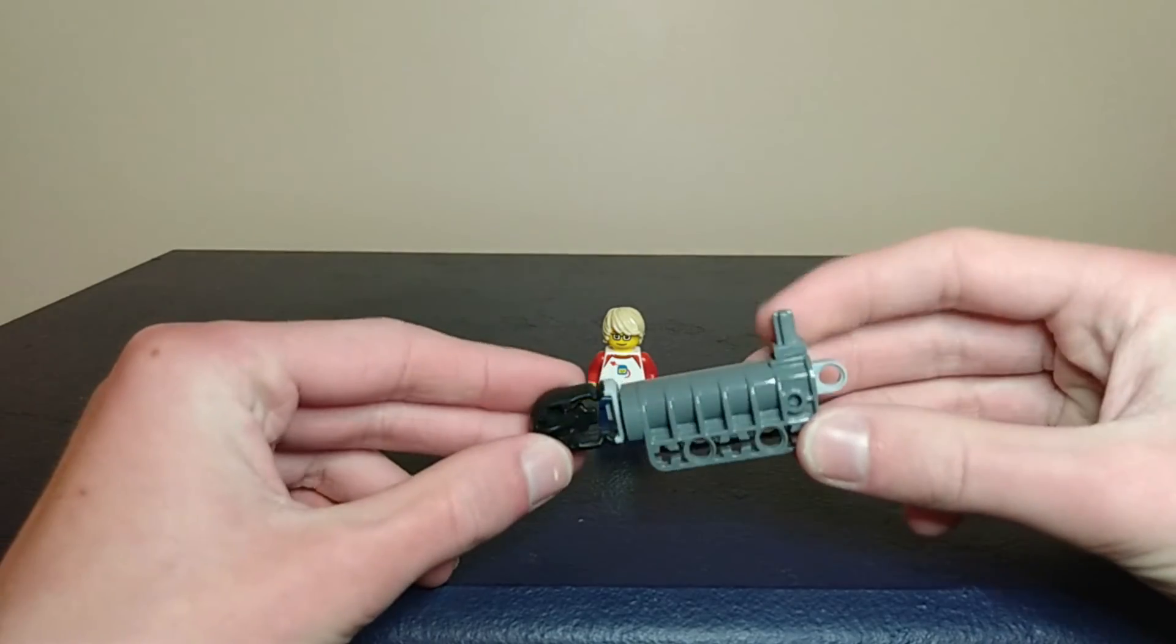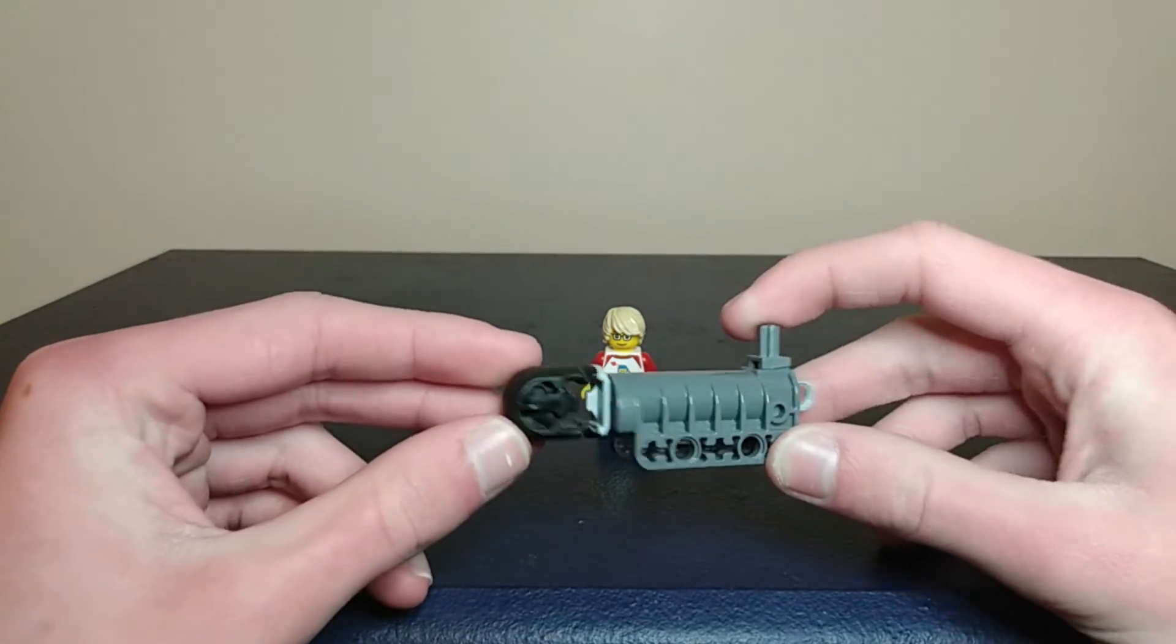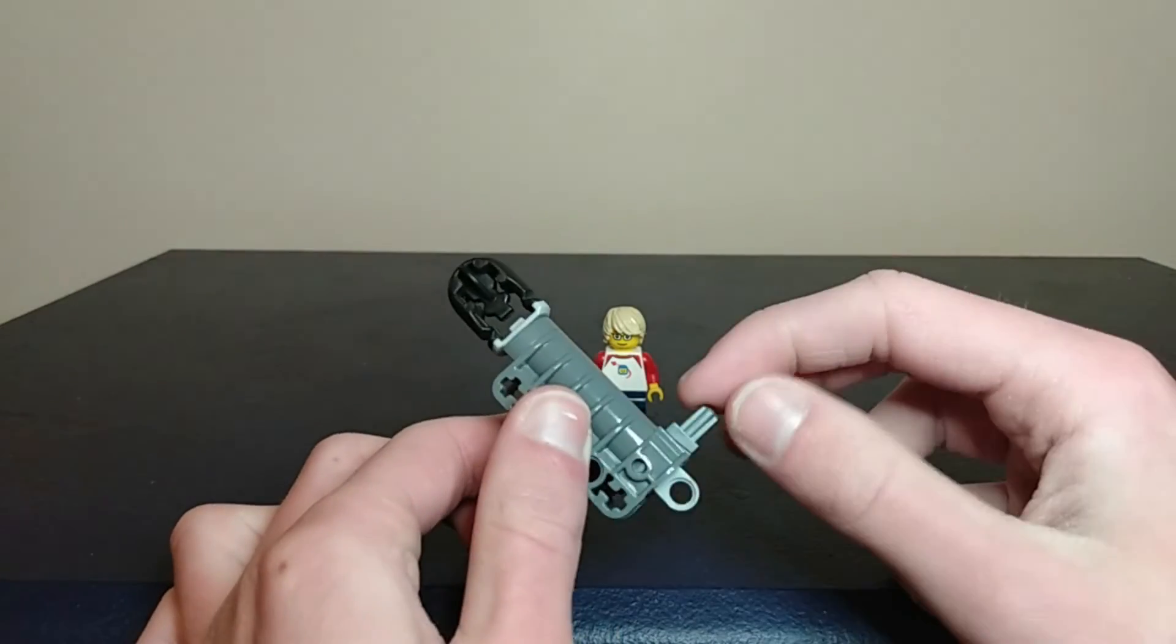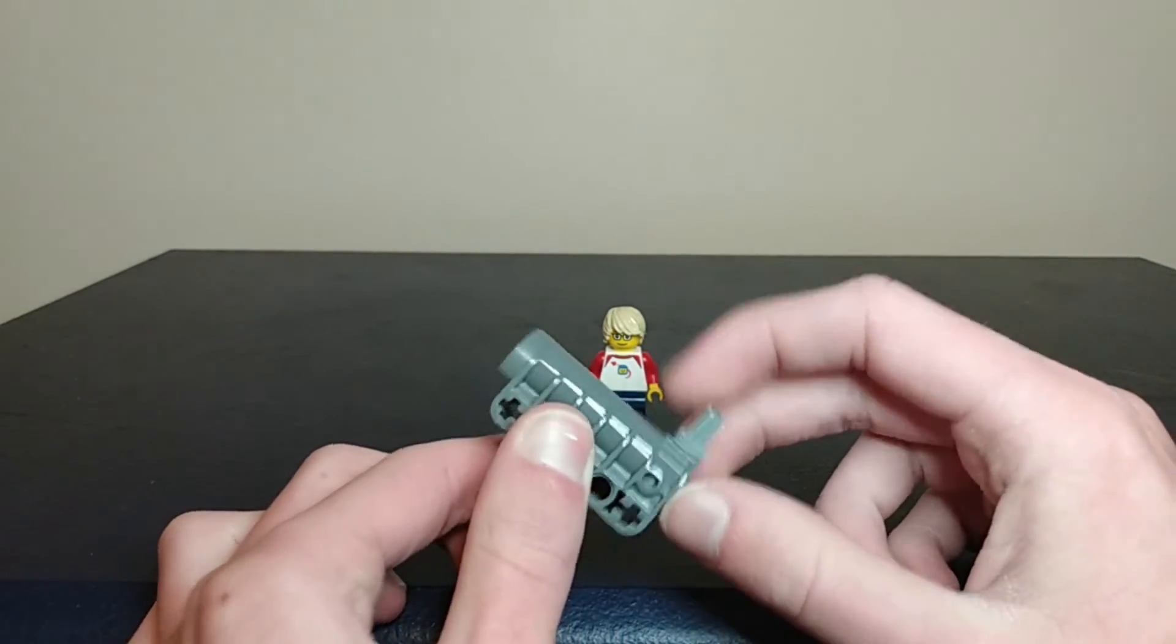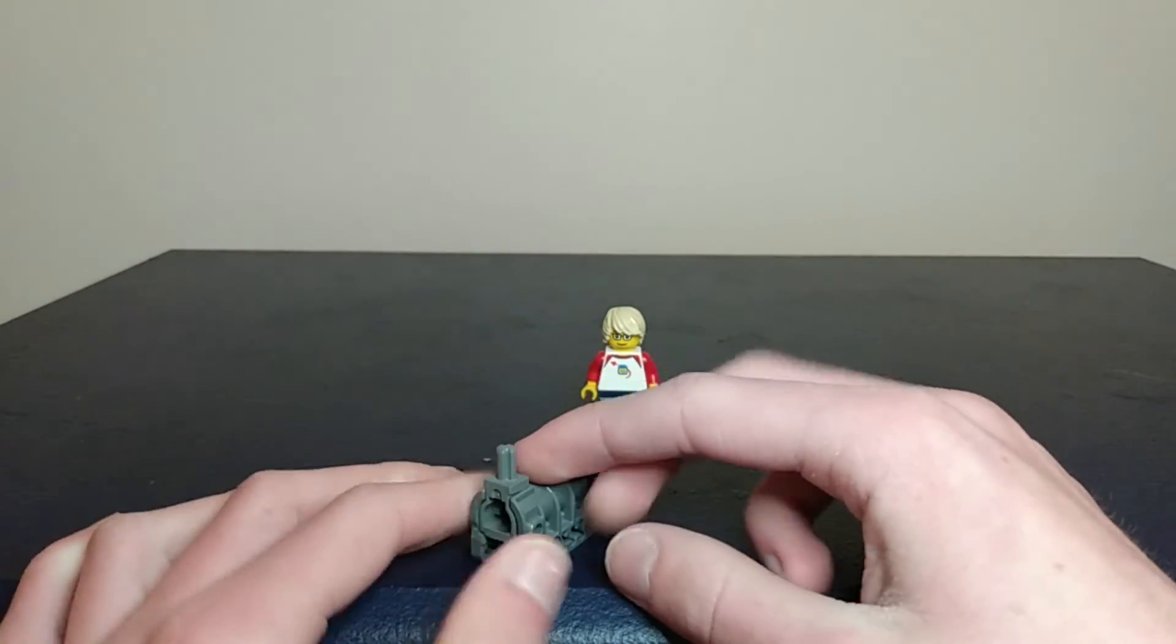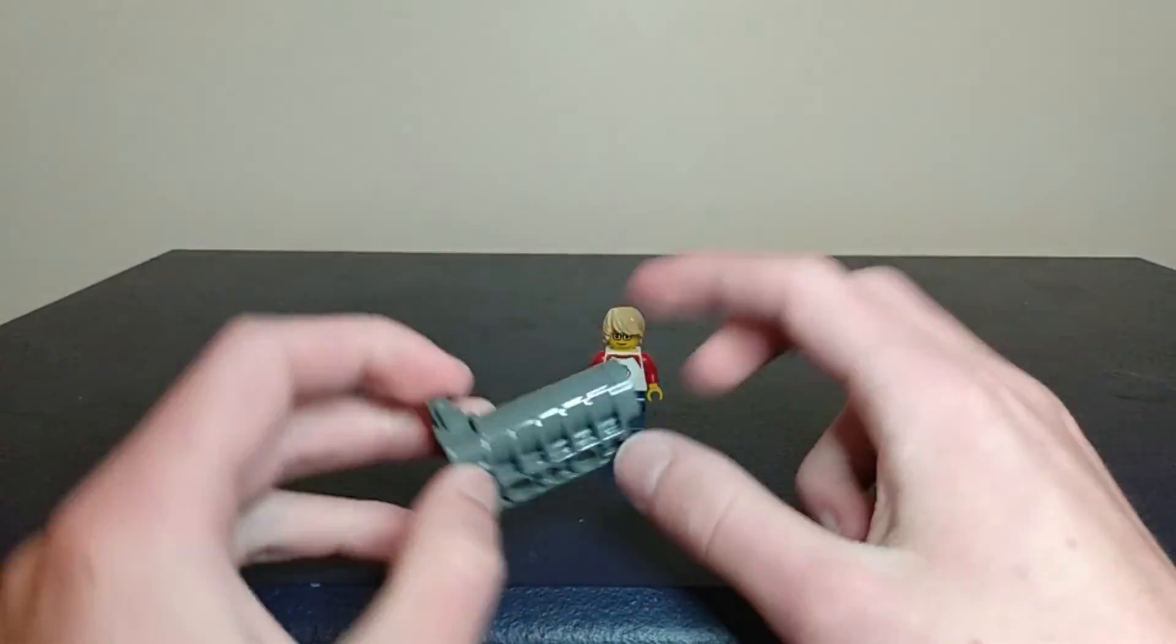But the all time best LEGO launcher is the original spring loaded shooter. This one works very simply. You just pull this back and it launches this big technic piece. Not hard to lose. Kind of hard to mount on your MOCs though. But yeah, it would definitely take out that minifigure really easily.